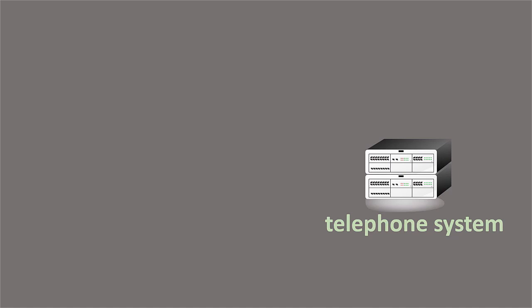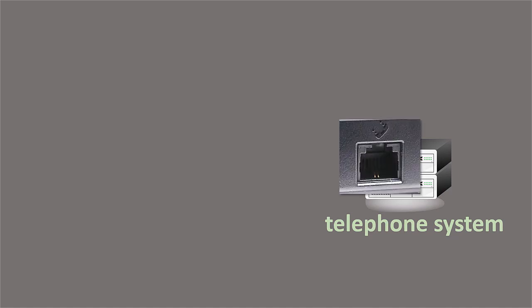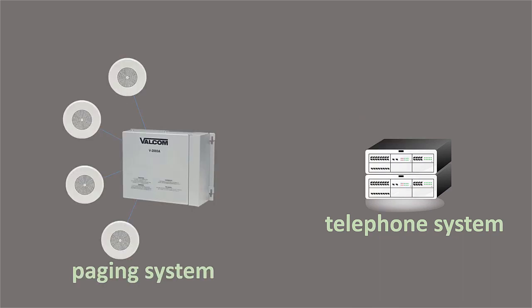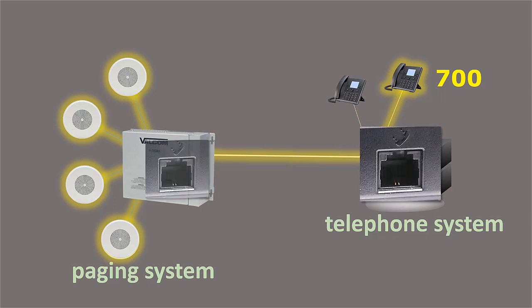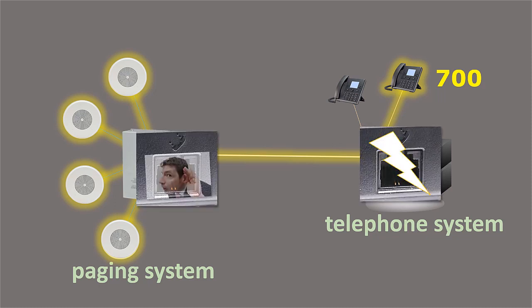Telephone ports are connections found on telephone systems and on telephones that allow you to plug them into each other, or for our purposes here at Valcom, to plug an overhead paging system into a telephone system. This allows the user to pick up a phone, dial a specific code, and make a page over the paging system. In this application, different types of telephone ports perform different functions.